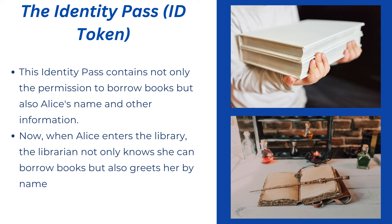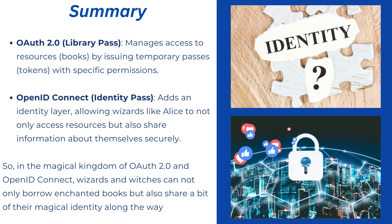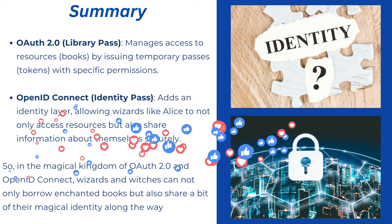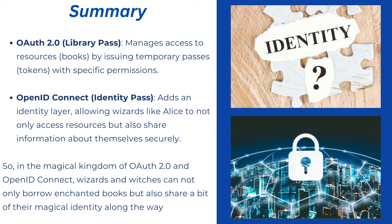When Allies enters the library, the librarian not only knows she can borrow the books but also greets her by name. In summary: OAuth 2.0 — the library pass — manages access to resources like books by issuing a temporary pass with specific permissions. OpenID Connect — the identity pass — adds an identity layer, allowing users like Allies to not only access resources but also share information about themselves securely. In the magical kingdom of OAuth 2.0 and OpenID Connect, wizards and witches can borrow enchanted books and share their magical identity along the way.